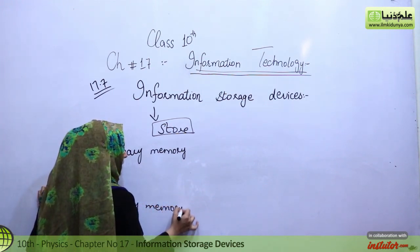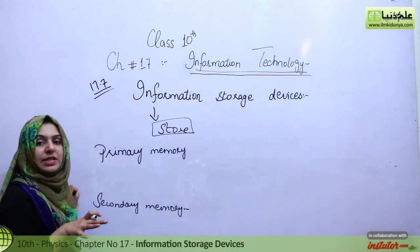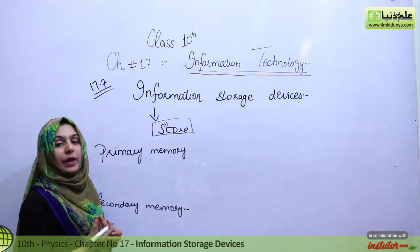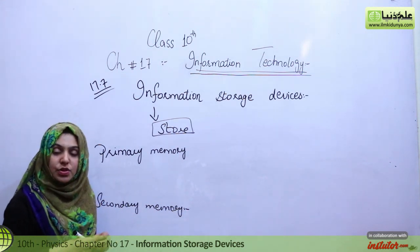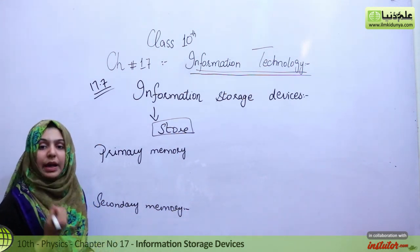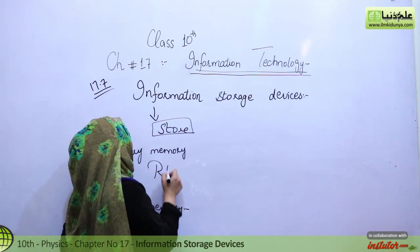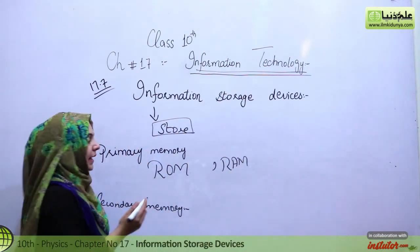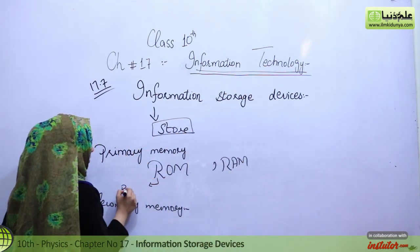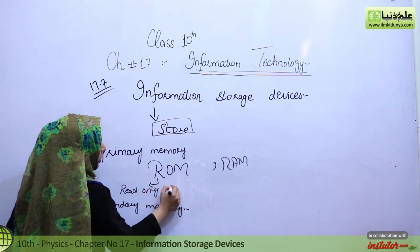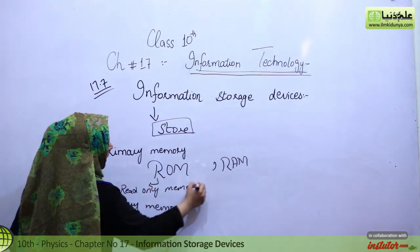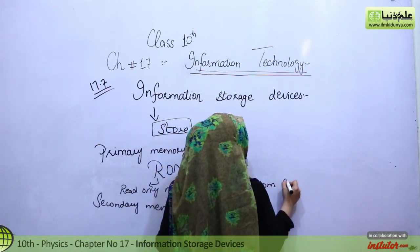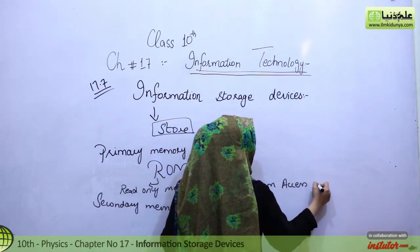Primary memory means what is required initially, right from the start — we call it primary. In a computer, primary memory includes ROM and RAM. ROM is Read Only Memory, and RAM is Random Access Memory.